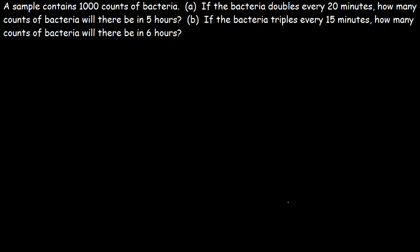A sample contains 1,000 counts of bacteria. If the bacteria doubles every 20 minutes, how many counts of bacteria will there be in 5 hours? So we need to write an equation. So this is going to be the population of bacteria. Initially, we have 1,000. And it doubles, so we're going to put a 2. It doubles every 20 minutes. So you can write the equation two ways. If you want T to be in minutes, it's going to be T over 20.